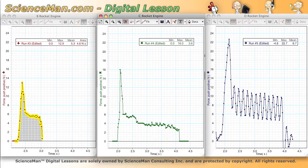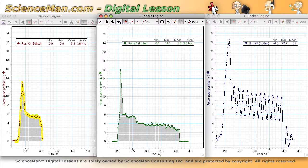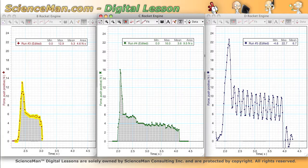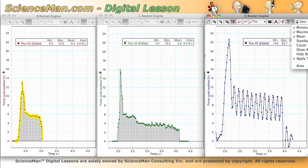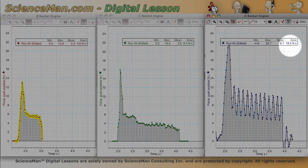So let's do it for the rest of the rocket engines. Let's do it for the C, and the area there is 9.5 newton-seconds. And we'll do the sum area underneath for the D engine, and we get 18.5.